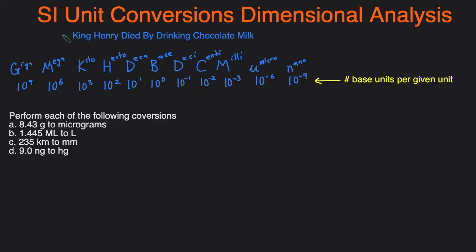Hey guys, it's Michael from Cockrochemistry. In today's video, we'll be going over how to do SI unit conversion, also known as dimensional analysis — essentially how to convert say grams to milligrams or nanograms to kilograms. This video is going to show the full process. If you want to do the shortcut and get to the answer, then check out my other video where I show you the shortcut.